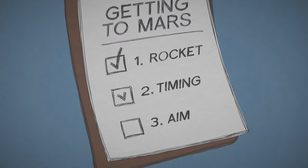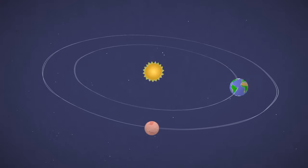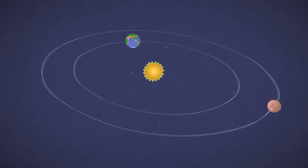Next, make sure you launch at the right time. Mars and Earth orbit the Sun at different speeds and distances. Sometimes they're really far apart, and other times they come closer together.